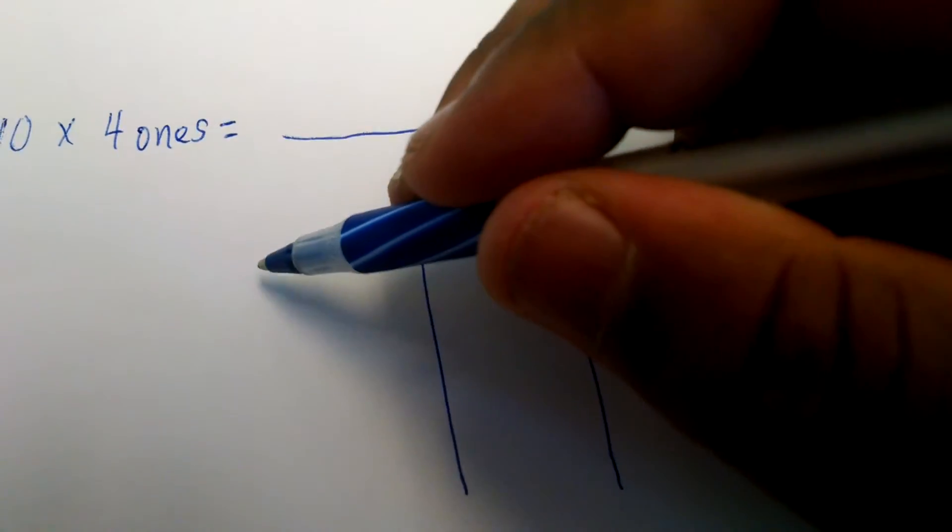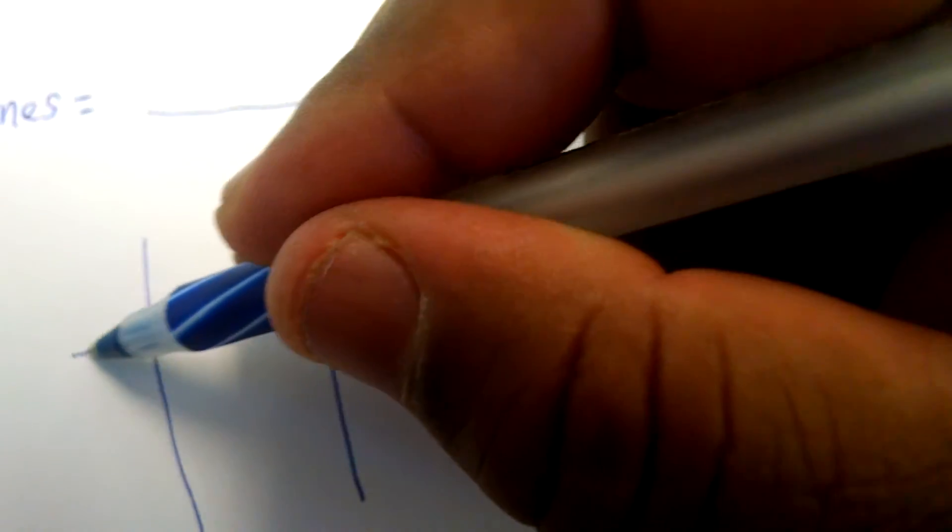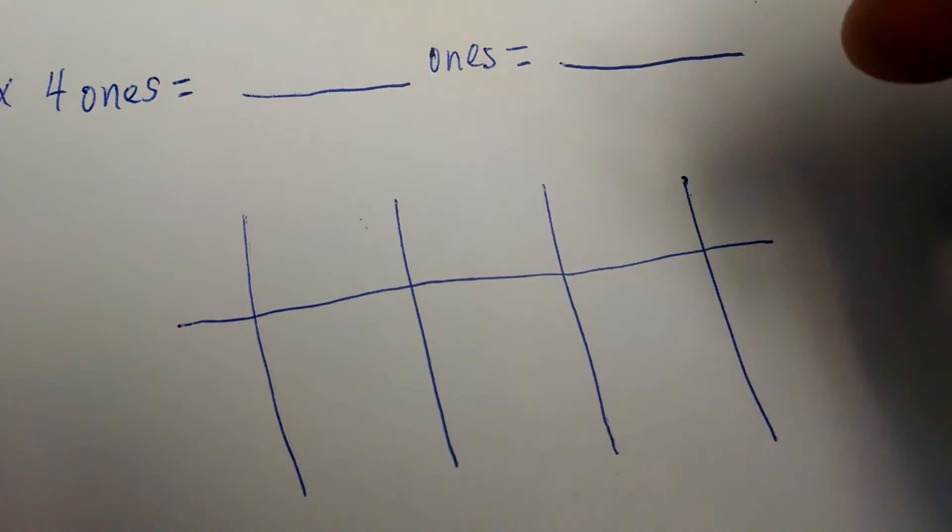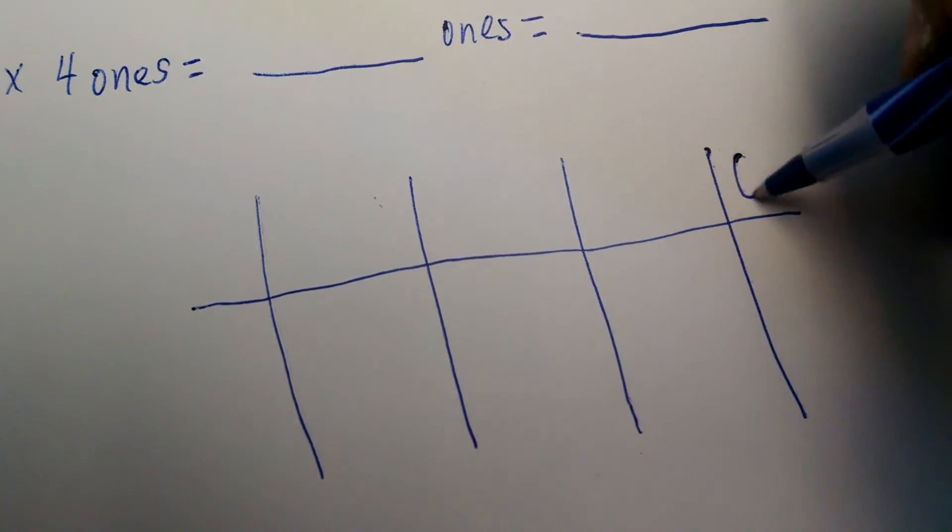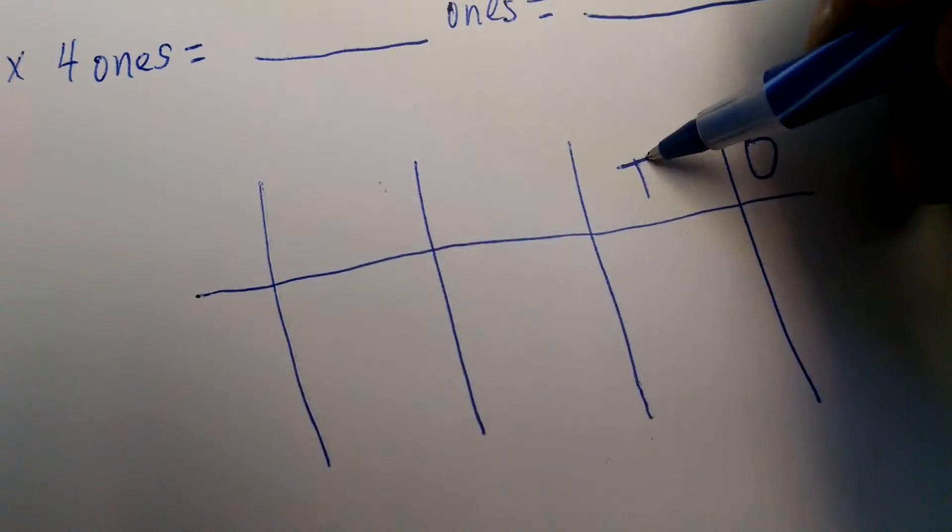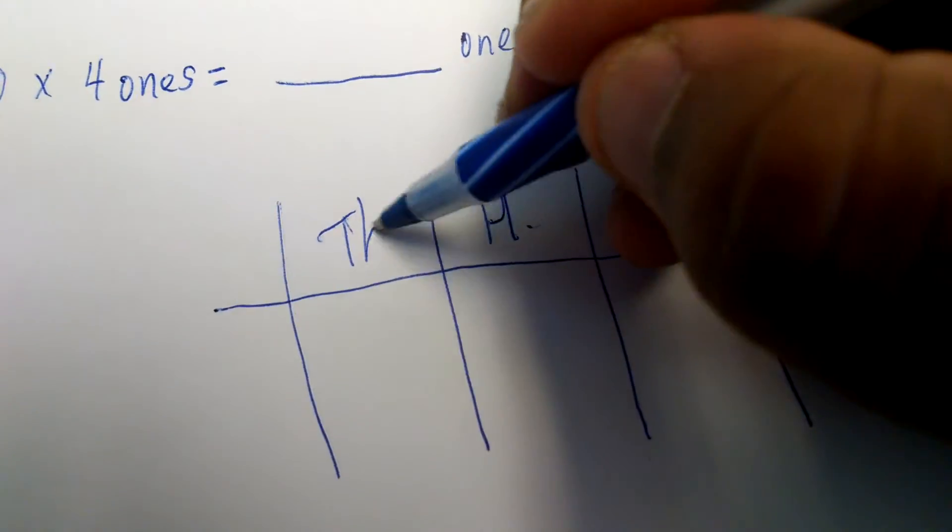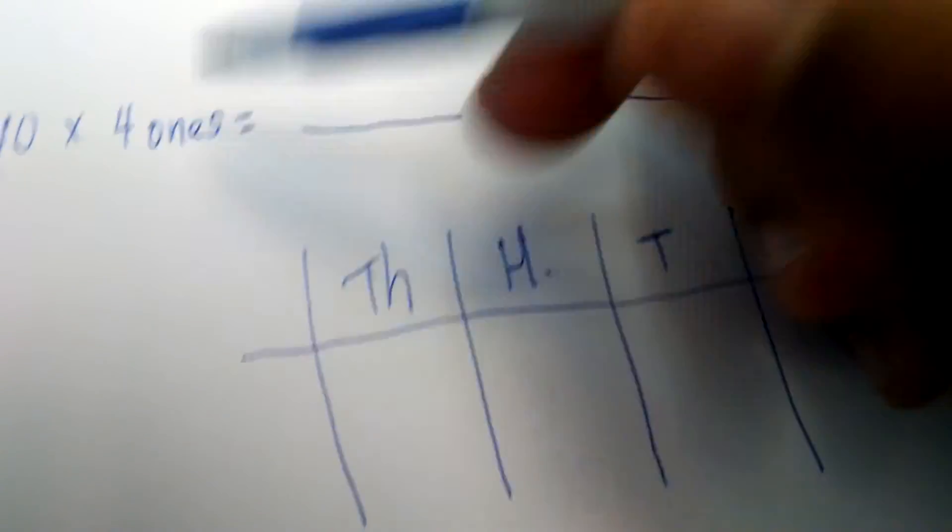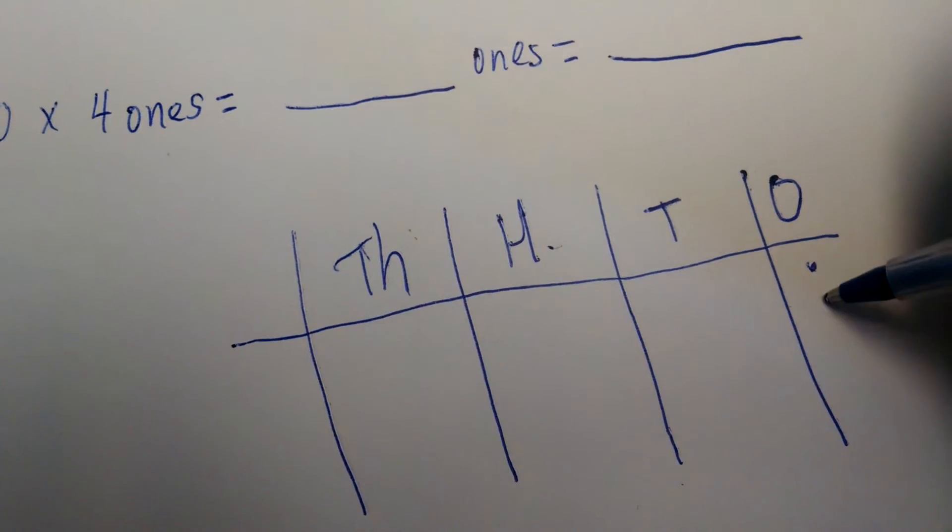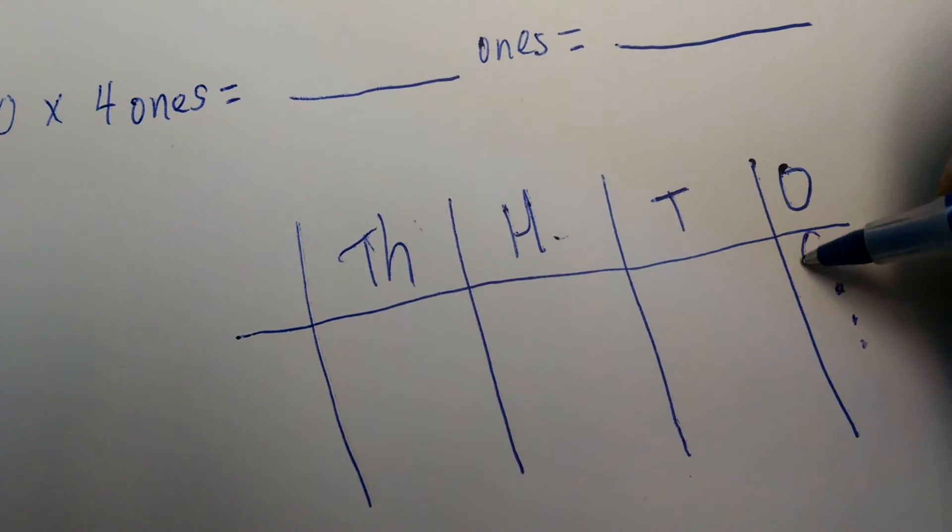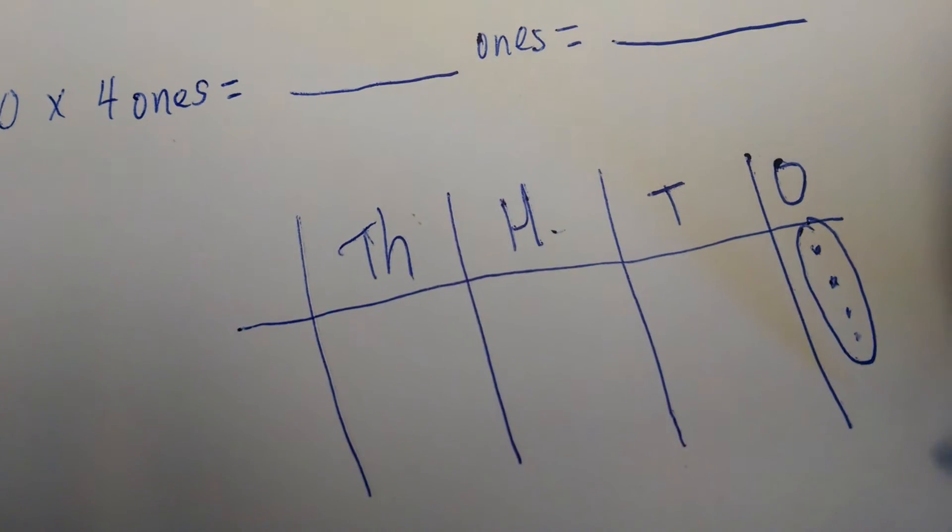So let's go up to the thousands. I have ones, I have tens, hundreds, and thousands. So I'm starting with 4 ones, that's equal to 4.